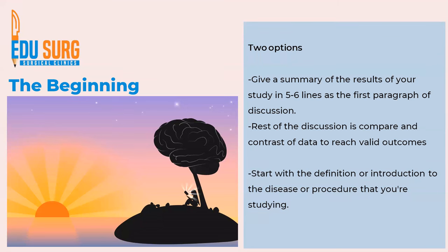The other way to write a discussion is very simple: you start with the definition or introduction to the disease or procedure that you are studying. For example, if you are studying surgery for diverticulitis, you can start your discussion with the surgical options of diverticulitis, or start with outcomes of surgical options of diverticulitis. It is very important to know that you need to jump right into the topic. You don't need to write what diverticulitis is if your article is on outcomes of surgery.